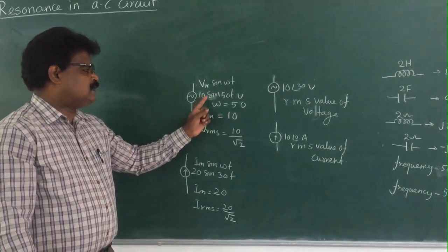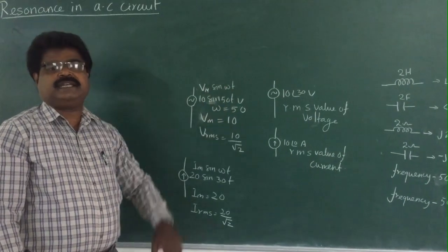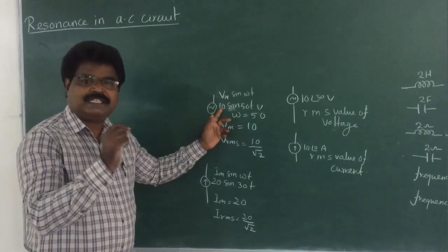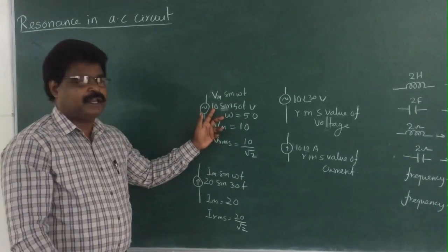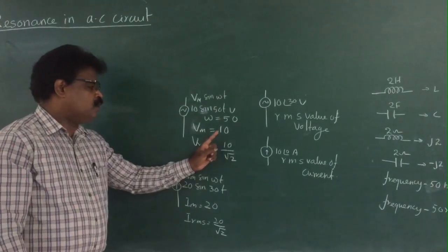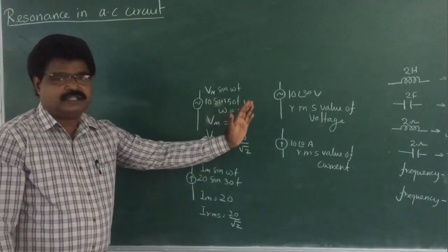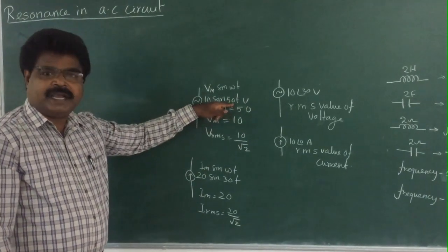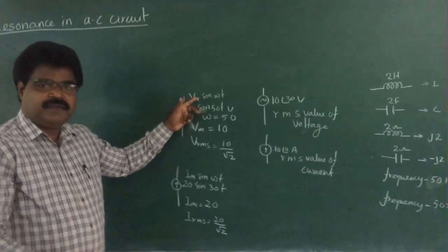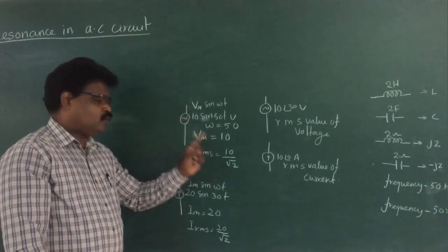Sometimes a problem represents voltage as 10·sin(50t) volts instead of phasor form. This follows the form Vm·sin(ωt), so 10 is the maximum value Vm. Since we use RMS values in problems, you must convert: Vrms = 10 divided by √2. Similarly, 50 is the value of ω.